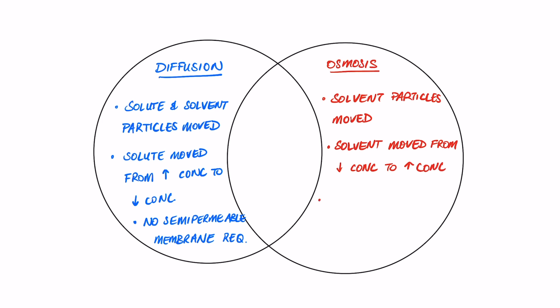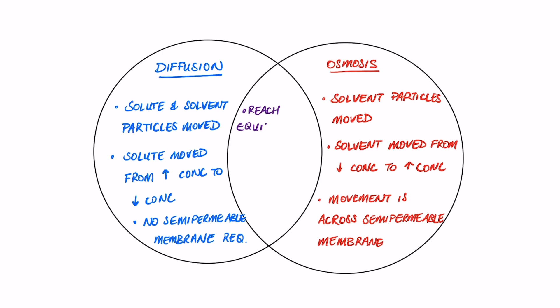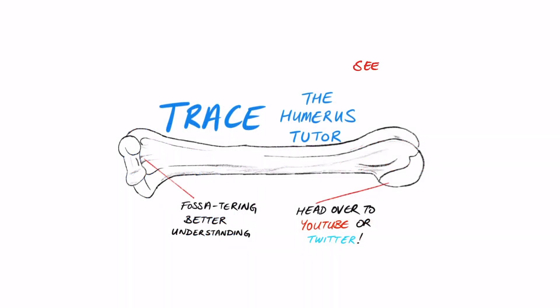In osmosis, the solvent moves from low concentration to high concentration, and this movement occurs across a semi-permeable membrane. What do these two processes have in common? Both diffusion and osmosis aim to reach equilibrium — whether in an open solution or across a membrane. Both require movement of molecules to reach equilibrium, just different molecules per process. Importantly, neither process requires energy input — both are passive processes.